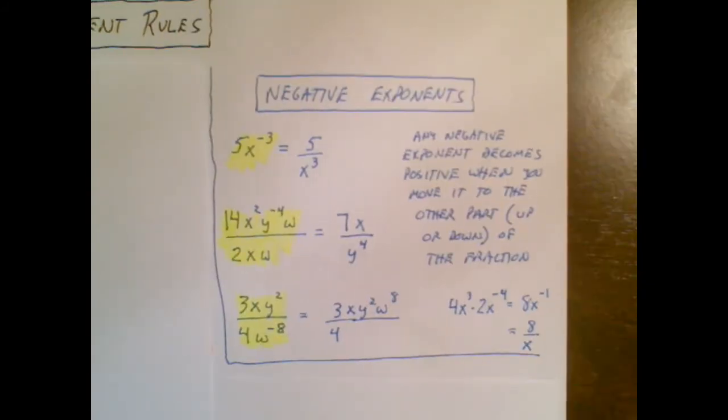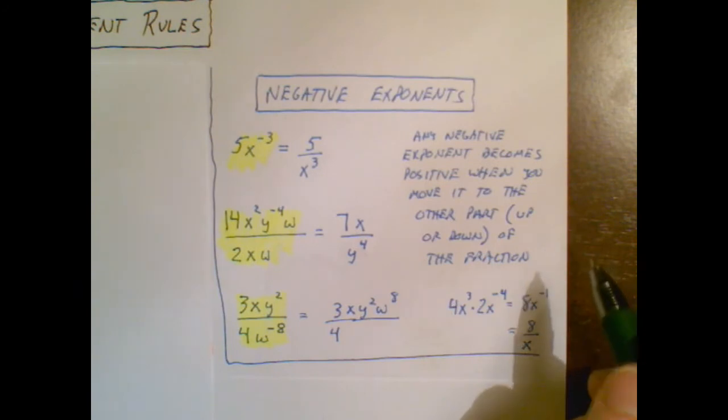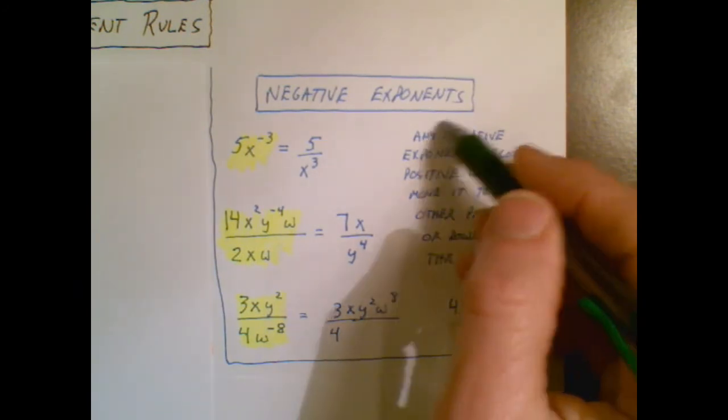Here's a rule I referred to a little bit earlier in the video and it involves negative exponents. And this rule is pretty simple. Anytime I have a negative exponent I will just move it to the other part of the fraction to make it a positive exponent.